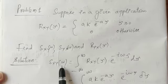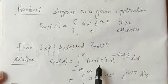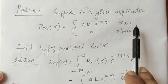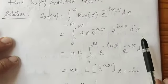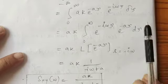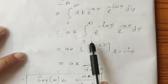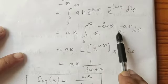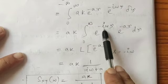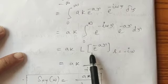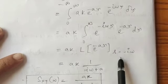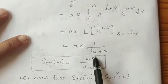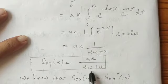Sxy of omega is the Fourier transformation of the cross correlation function Rxy of tau. Since the function is defined from 0 to infinity, we write Sxy(omega) = A·k times the integral from 0 to infinity of e^(minus A·tau) · e^(minus i·omega·tau) d·tau. This is the Laplace transform of e^(minus A·tau) evaluated at s = i·omega, which equals A·k · (1 over i·omega plus A). Therefore, Sxy(omega) = A·k divided by (i·omega + A).